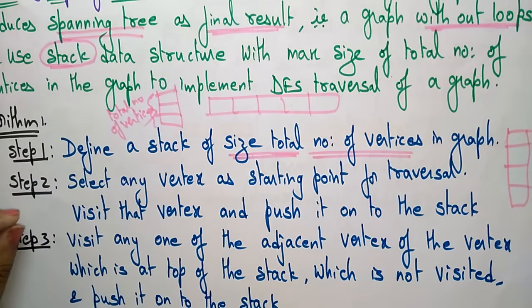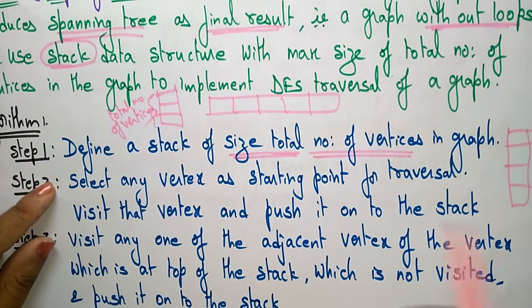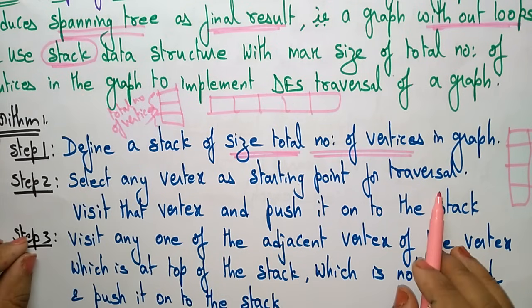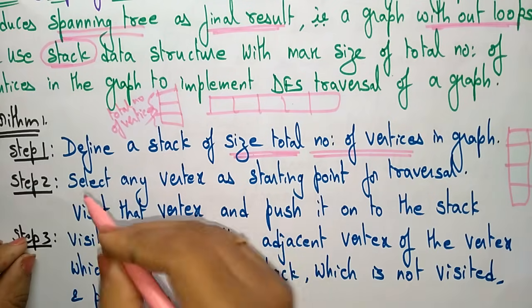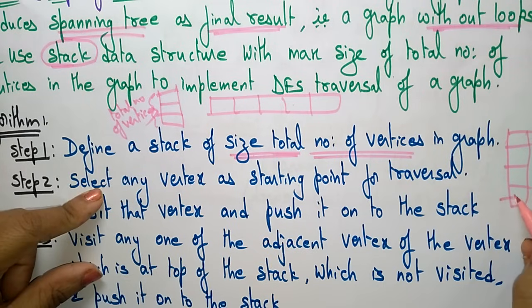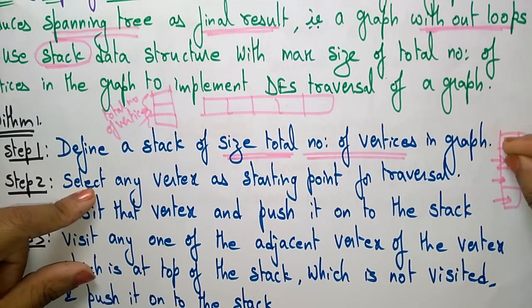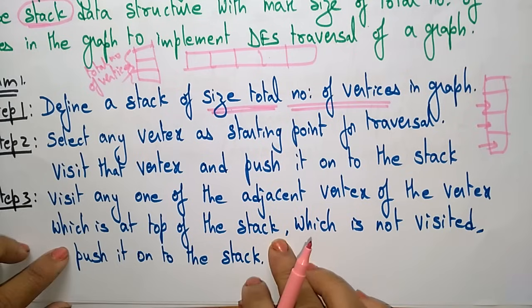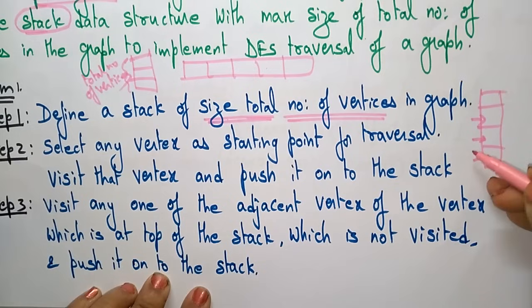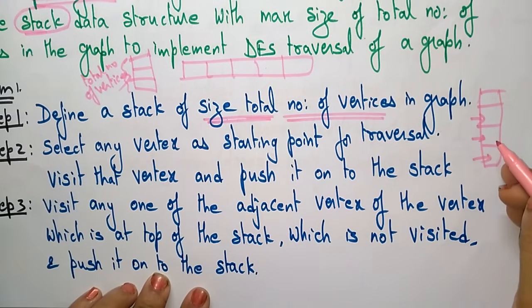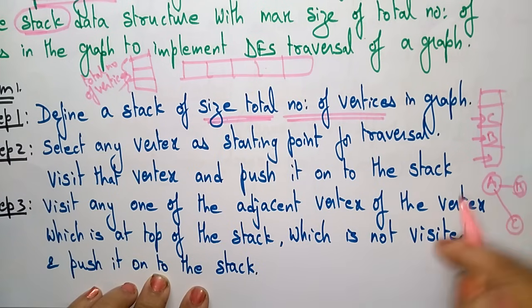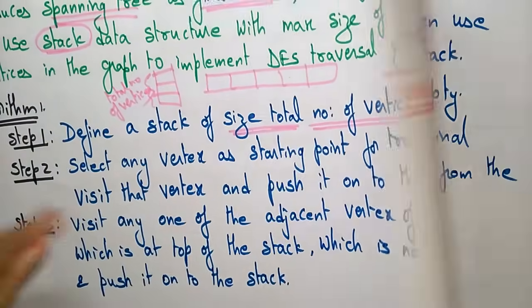Step one: define a stack of size equal to total number of vertices, creating an empty stack. Step two: select any vertex as a starting point for traversal, visit that vertex, and push it onto the stack. Step three: visit any one adjacent vertex of the vertex at the top of the stack which is not yet visited and push it onto the stack.